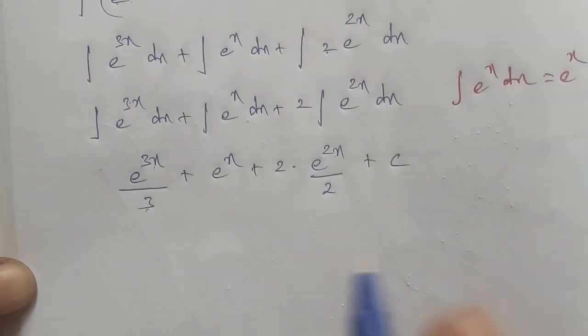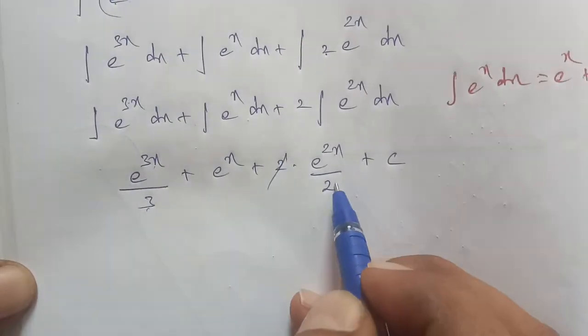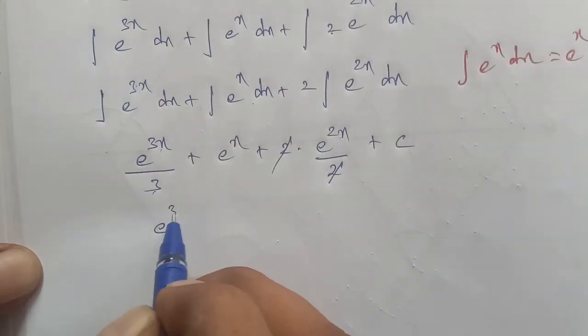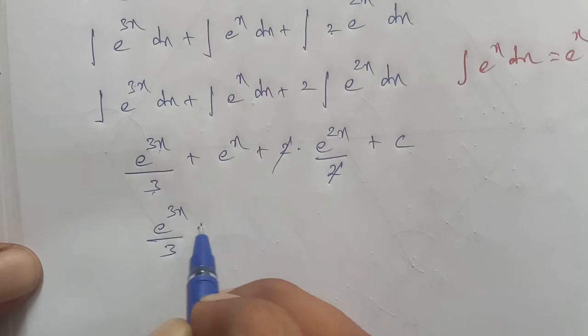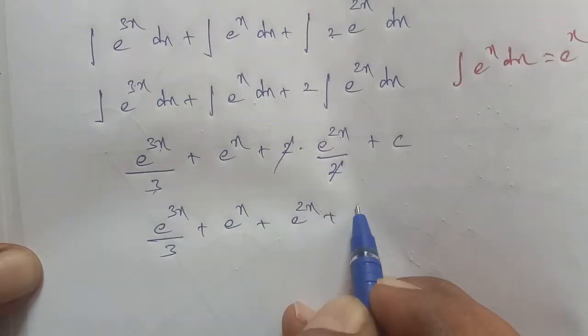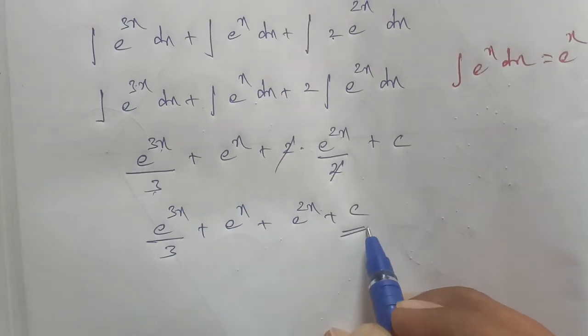So the final answer is: e^(3x)/3 + e^x + e^(2x)/2 + c. This is your answer. Thank you.